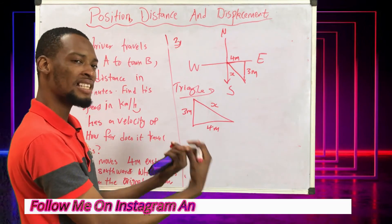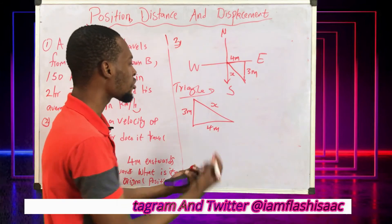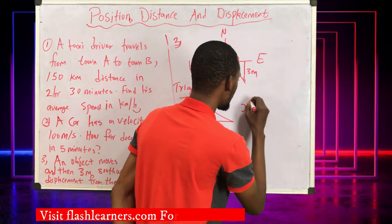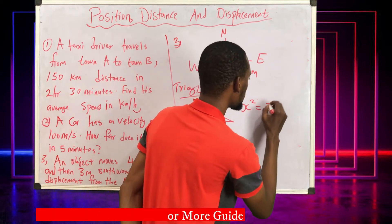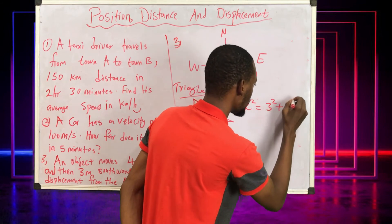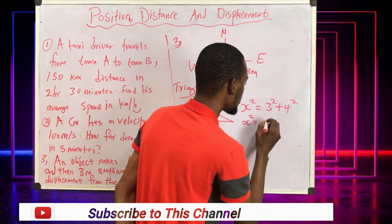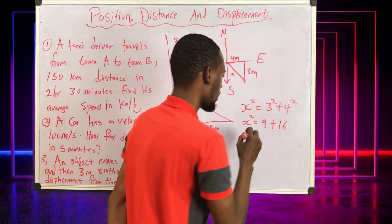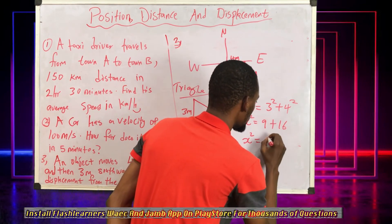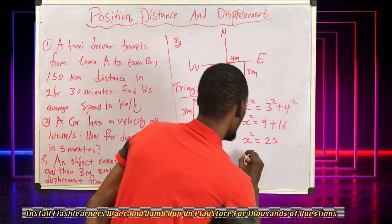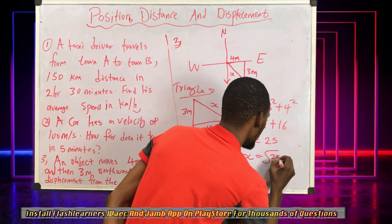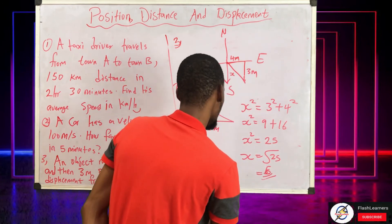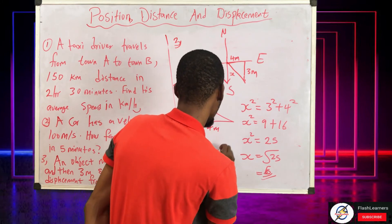This is simply a triangle. Using the Pythagorean theorem: s squared equals three squared plus four squared, so s squared equals nine plus sixteen, s squared equals twenty-five, and s equals the square root of twenty-five, which is five. Therefore the displacement is five meters.